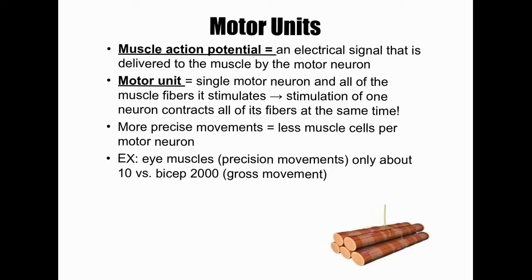Hopefully you guys remember from way back in the nervous system: an action potential is when a neuron is actually firing, sending a nerve impulse. These are the efferent motor neurons coming from the central nervous system, and they're going to innervate or connect to a muscle. Innervating just means it has a connection with those individual muscle fibers or muscle cells.